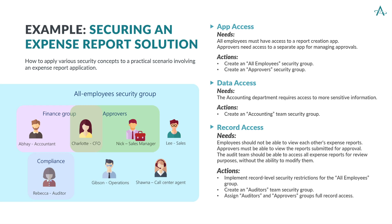To maintain privacy, employees should not be able to view each other's expense reports. This requires implementing record-level security so that employees can only access their own records. However, approvers must have the ability to view the reports submitted for approval. Furthermore, the audit team should be able to access all expense reports for review purposes without the ability to modify them. Thus, an Auditors security group is needed. Both the auditors and approvers groups should have access to all records, while the All Employees group should be restricted to accessing only records they create.